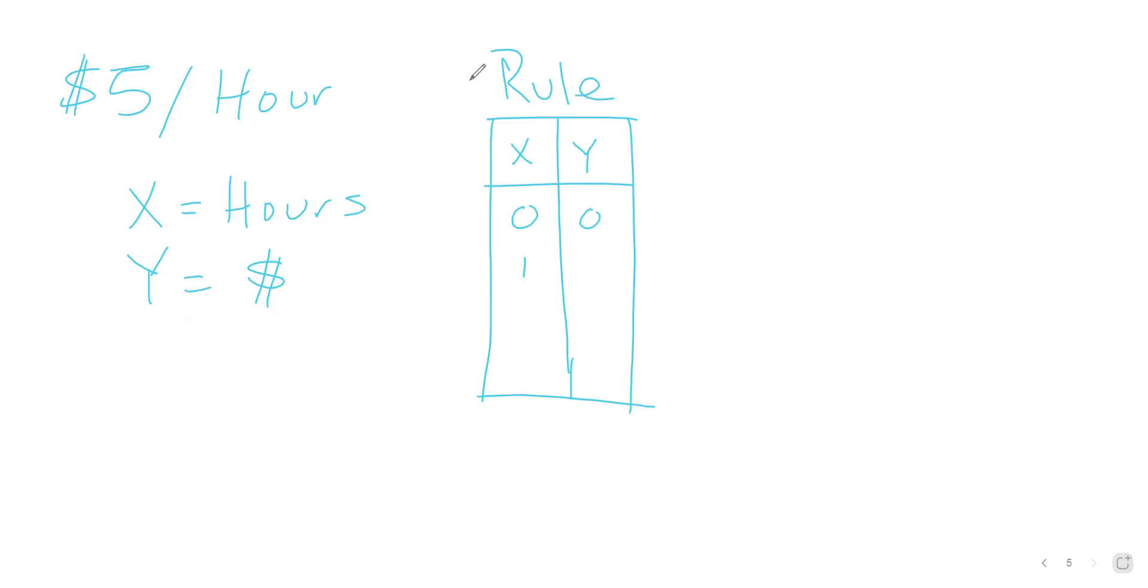So I would have this rule that states I have X and Y. If we think about that, if I work zero hours, well, I would get $0. That makes sense. If I worked one hour, I would get $5. If I worked two hours, I would get $10, because I'm getting $5 for every hour. If I worked three hours, I would get $15.